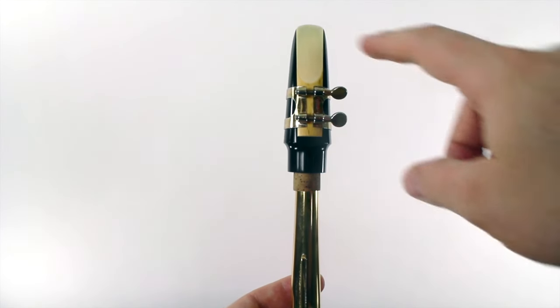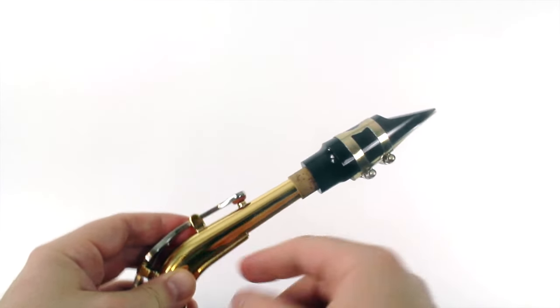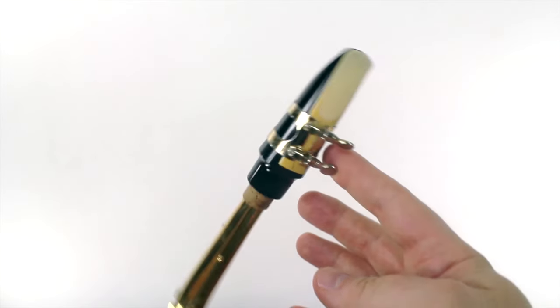So here we have our reed, ligature, mouthpiece, and neck all correctly assembled. Take a look at yours and make sure it looks just like mine.